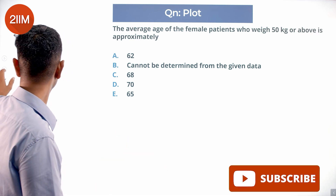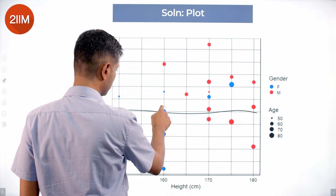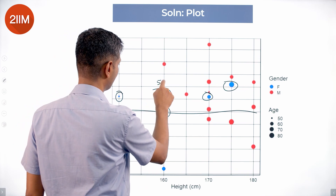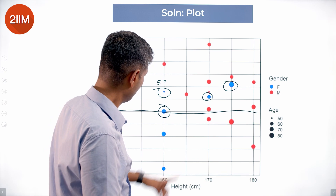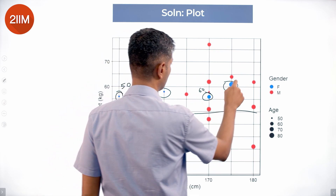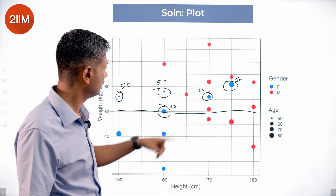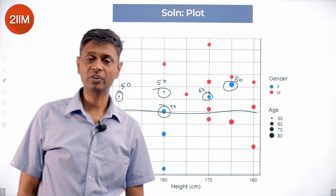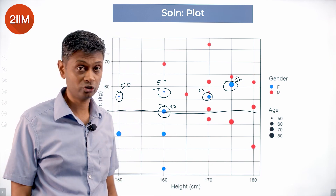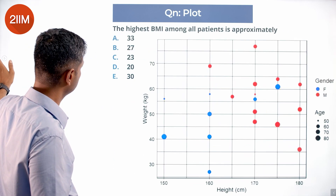Question: the average age of female patients who weigh 50 kg or above. Immediately size comes into picture — female patients are blue, 50 kg or above means above that line. Counting the qualifying points, I identify values of 50, 50, 60, 70, and 80. That gives 50 plus 50 = 100, plus 170, plus 60 = 230, plus 80 = 310. Dividing 310 by 5 gives 62. I had a tough time reading these chart sizes; it's a pain to look at these charts.